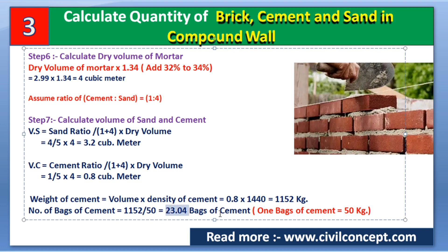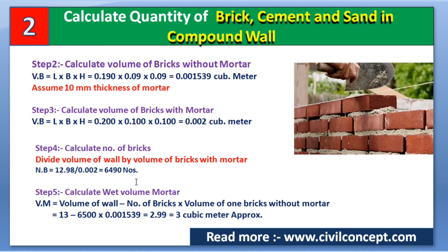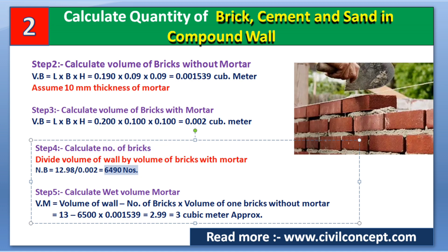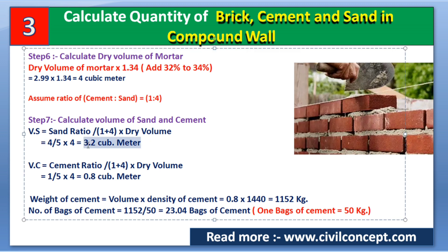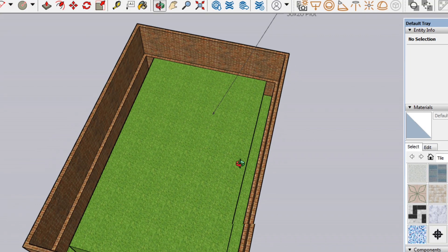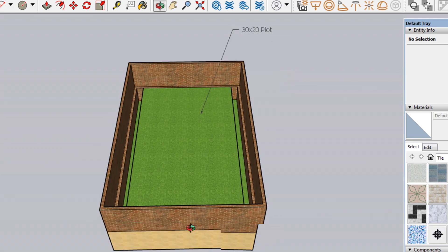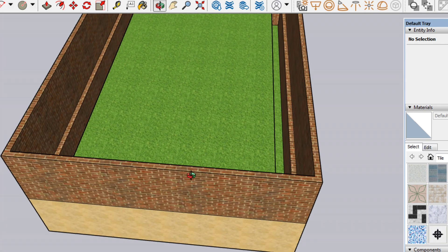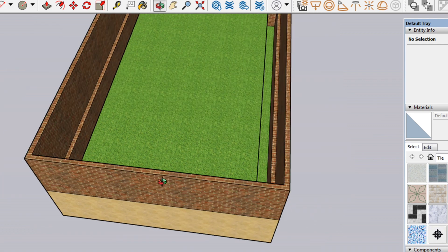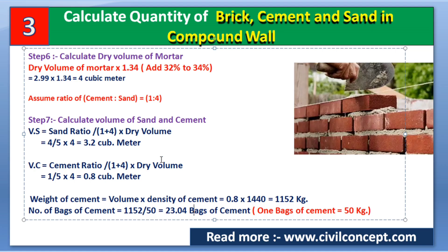In summary, to construct this compound wall: number of bricks = 6490, volume of sand = 3.2 cubic meters, and bags of cement = 23.04. Note that no openings have been assumed in this wall. If there are any openings in the compound wall, you need to deduct that area from the total. This is how we calculate the quantity of bricks, cement, and sand for a compound wall.